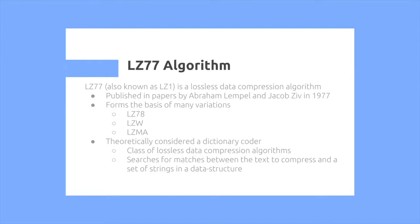LZ77, also known as LZ1, is a lossless data compression algorithm. It was published in papers by Abraham Lempel and Jacob Ziv in 1977, and it forms the basis of many different variations you may have heard of, such as LZ78, also known as LZ2, LZW, and LZMA.